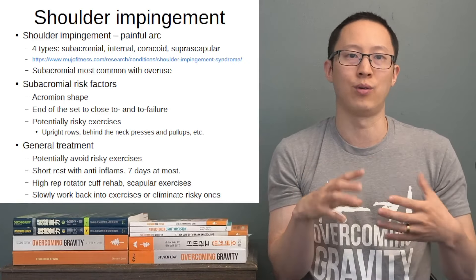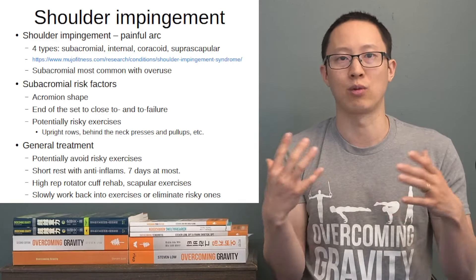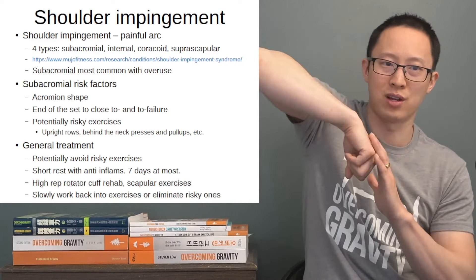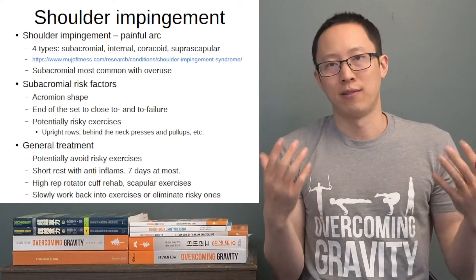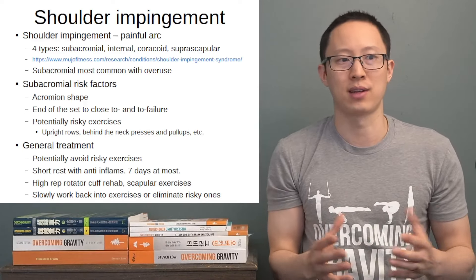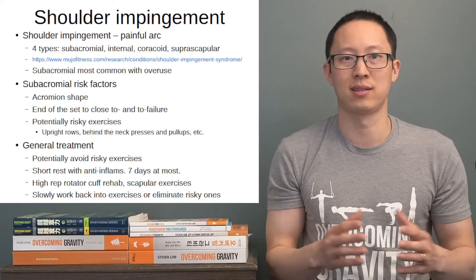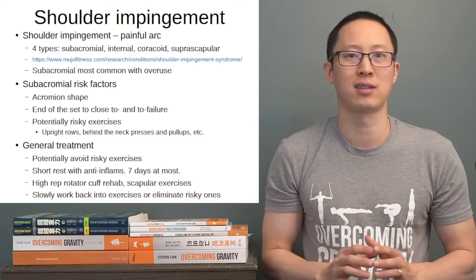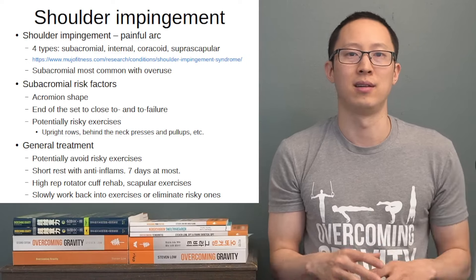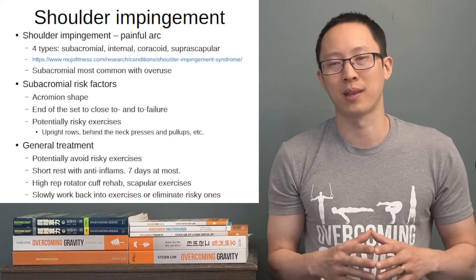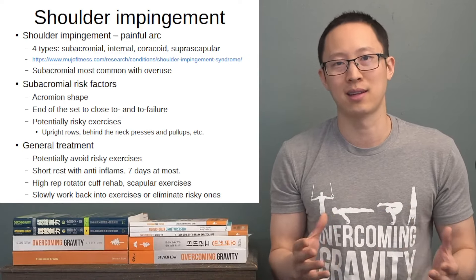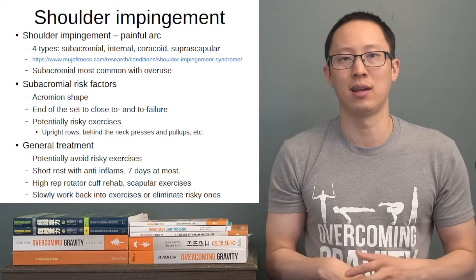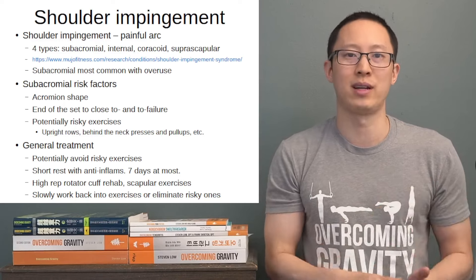If the scapula is not moving well as the shoulder goes overhead, that creates a problem. Scapulohumeral rhythm means the scapula rotates about 60 degrees while the shoulder going up is about 120 degrees. If the scapula can't move effectively or doesn't activate at the right time, that can cause rubbing of the structures as the arm goes up.